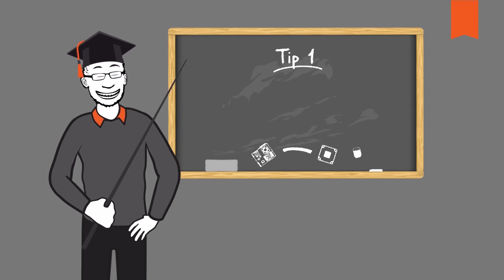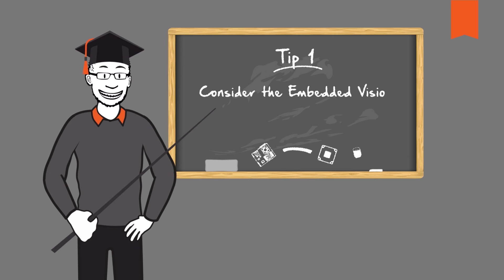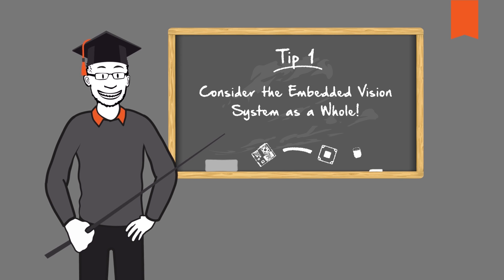Tip 1: Consider the embedded vision system as a whole. When purchasing embedded vision solutions, it is extremely important to consider the system as a whole and not their individual key components separately.